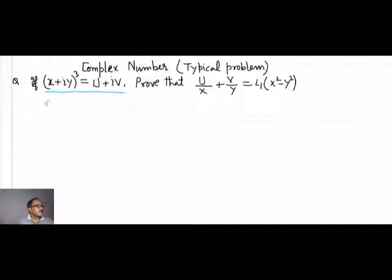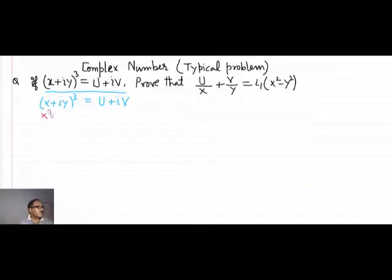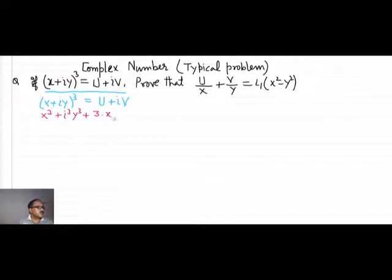The given part is: x plus iy, whole cube, is equal to u plus iv. Now using the identity (a + b)³, on the left-hand side you will see x³ + i³y³ + 3·x·iy·(x + iy), and on the right-hand side only u + iv.